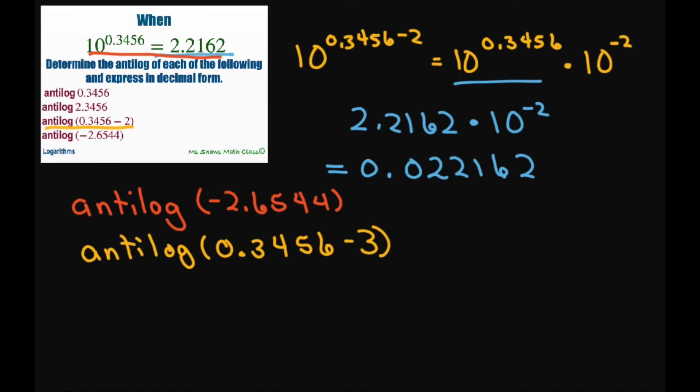All right, so these two are equivalent. Therefore, we're going to get 10 to the power of 0.3456 minus 3 equals 10 to the power of 0.3456 times 10 to the power of negative 3.